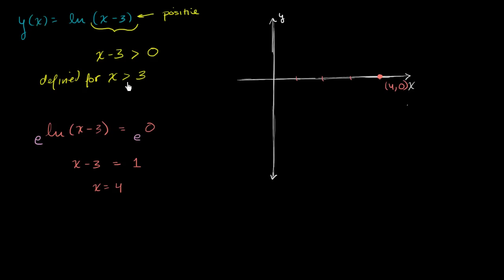We also know that this is only defined for x being greater than 3. So let's just put a little dotted line right over here at x equals 3. And we know that our function isn't even defined for x equals 3 and any value to the left of it.